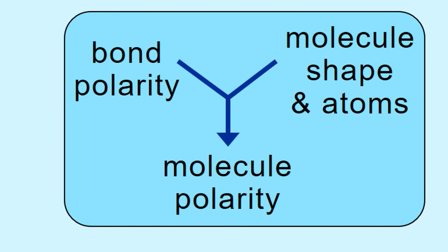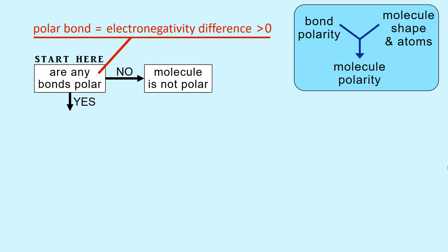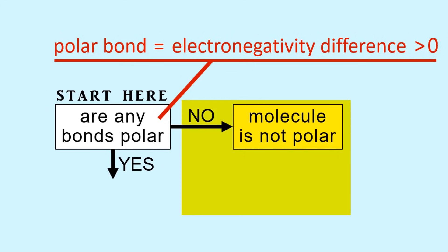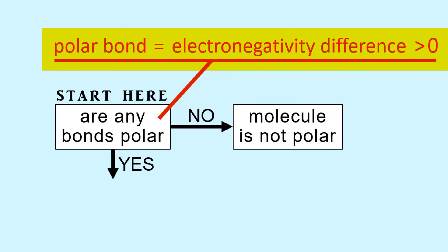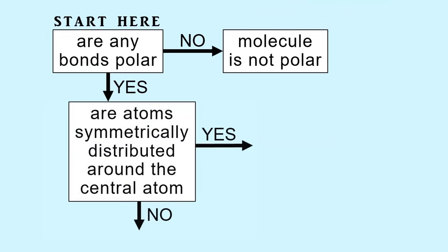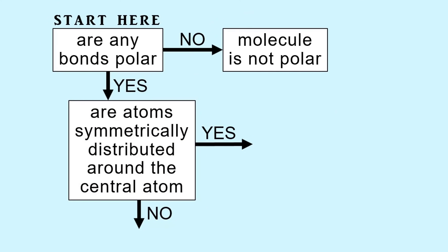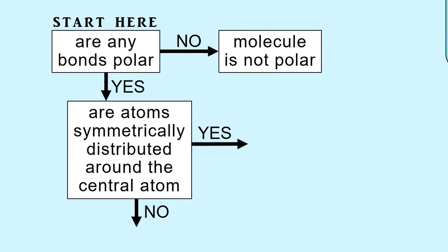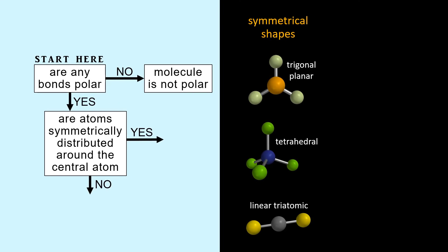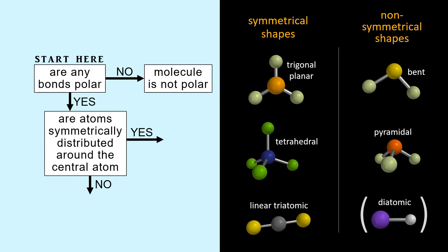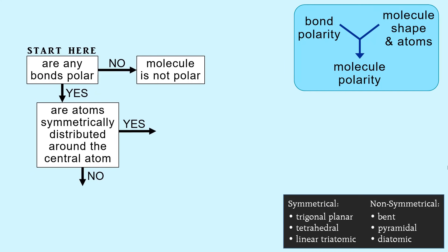Everything we have been looking at so far has been the result of combining bond polarities with the molecule shape and identity of the outside atoms to determine molecule polarity. Let's put that in a flowchart. You begin by looking to see if any bonds are polar; if not, then you cannot have a polar molecule. For the purposes of determining molecular polarity, we consider an electronegativity difference greater than zero to be polar. Now if there are polar bonds, then you look at the symmetry of the outside atoms, which is determined by the shape of the molecule. Symmetrical shapes are trigonal planar, tetrahedral, and linear triatomic — outside atoms are evenly distributed around the central atom. Non-symmetrical shapes are bent and pyramidal, and we include diatomic as a special case.